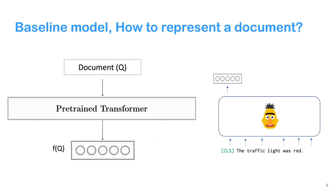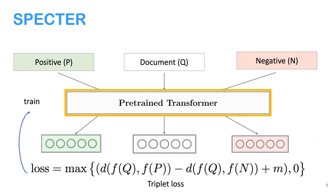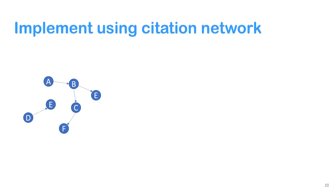As a baseline, you'd pass a paper to a transformer like BERT and take the CLS representation. We add a pre-training objective to make this representation more powerful. For each query document, we pair it with a positive document and a negative document. We use a triplet loss objective that forces the distance between the query and positive to be smaller than the query and negative, with a margin of 1.